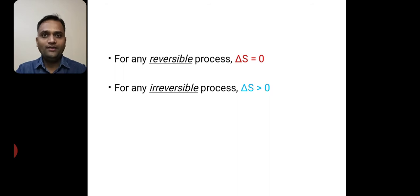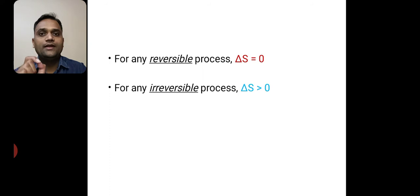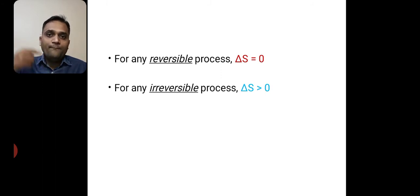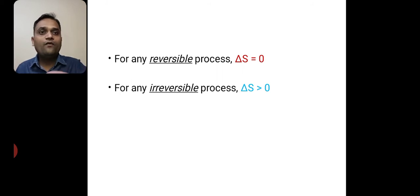Two main important points related to entropy. For any reversible process, delta S is equal to 0. Delta S is the change in entropy. When we consider a reversible process, initially the system has a certain entropy. After completing that reversible process, the system again has the same entropy as before. So the change in entropy for a reversible process is 0: delta S is equal to 0.